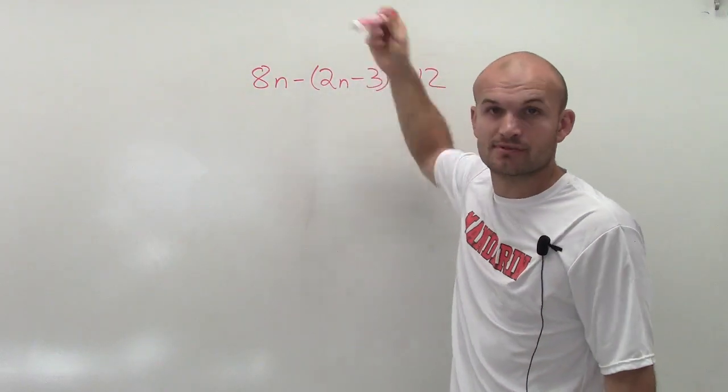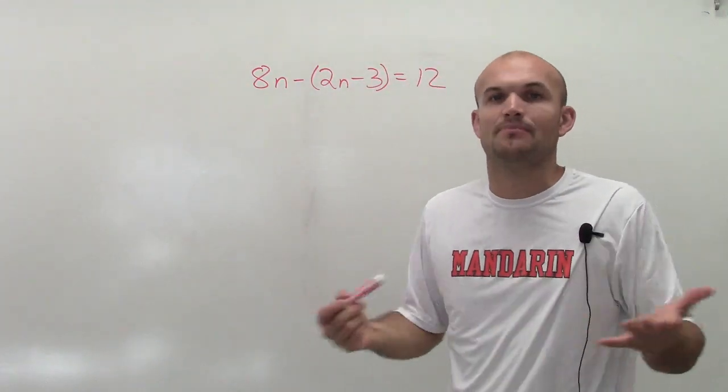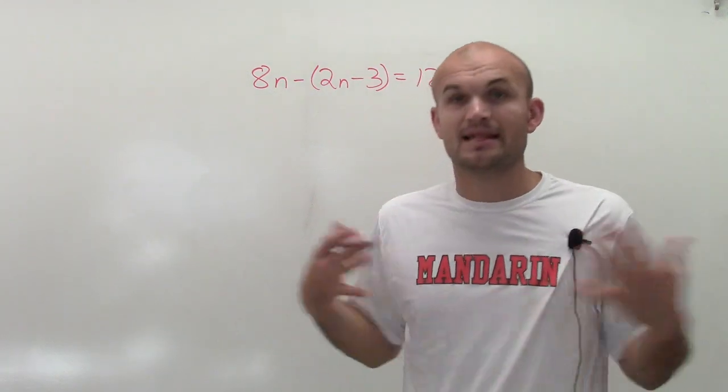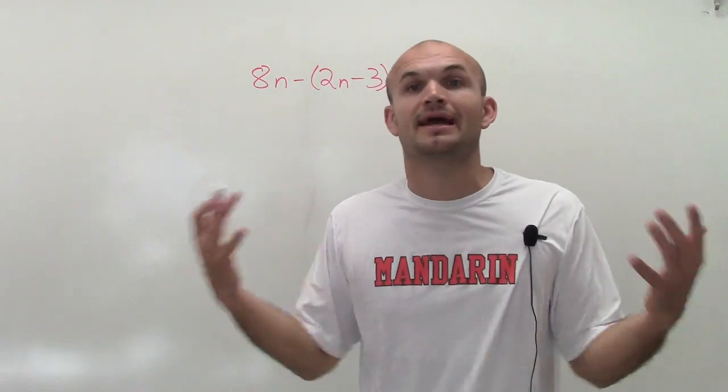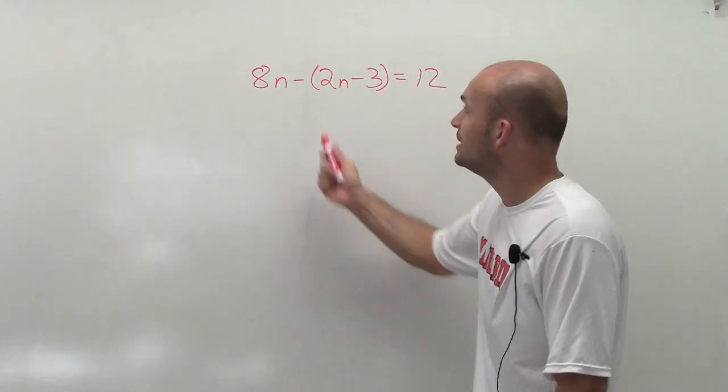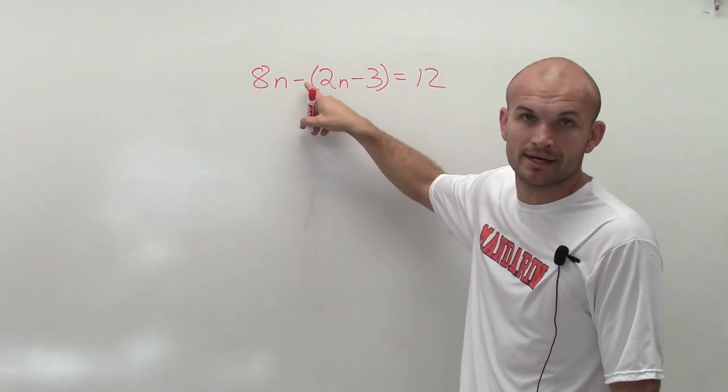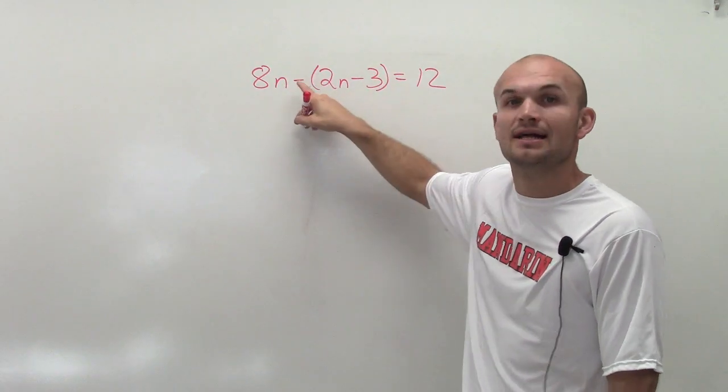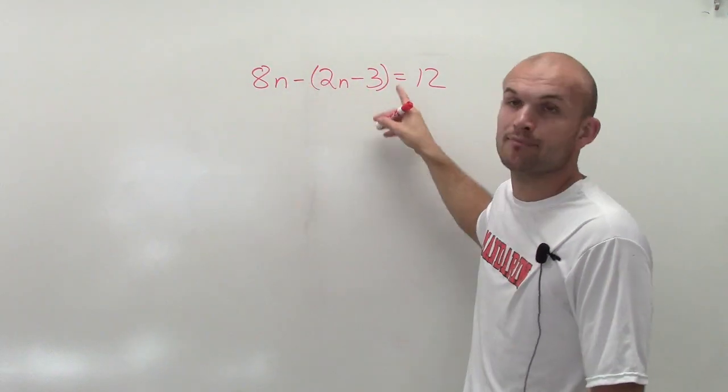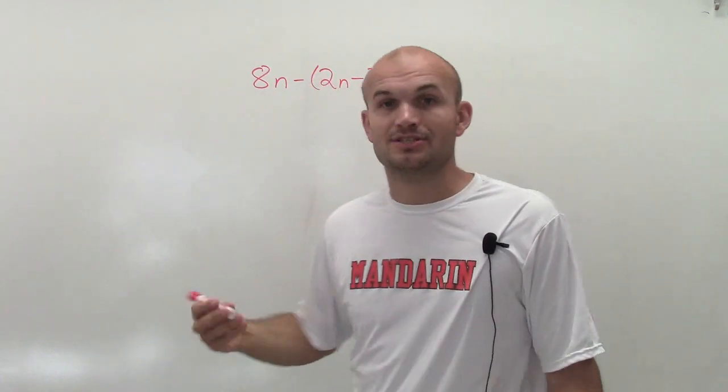Then I look at distributive property - can I apply it? For this one, yes I need to, because when you have minus a parentheses, that's really a negative one being multiplied to all these terms. So I need to apply the distributive property. I have 8n minus 2n plus 3